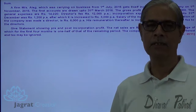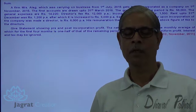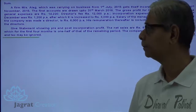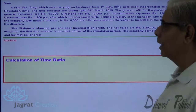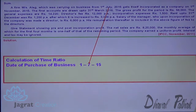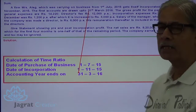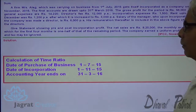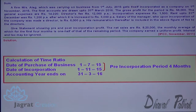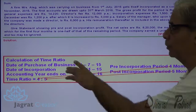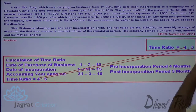For the purpose of solving this sum, first I will work out the time ratio, because time-relevant expenses are required to be distributed between pre and post incorporation periods on the basis of time. The business was purchased on 1-7-2015. Date of incorporation is 1st November 2015. The accounting year ends on 31st of March. Number of months prior to incorporation, from 1st July to 1st November, is 4 months. Post incorporation period, from 1st November to 31st March, is 5 months. Time ratio is 4:5.